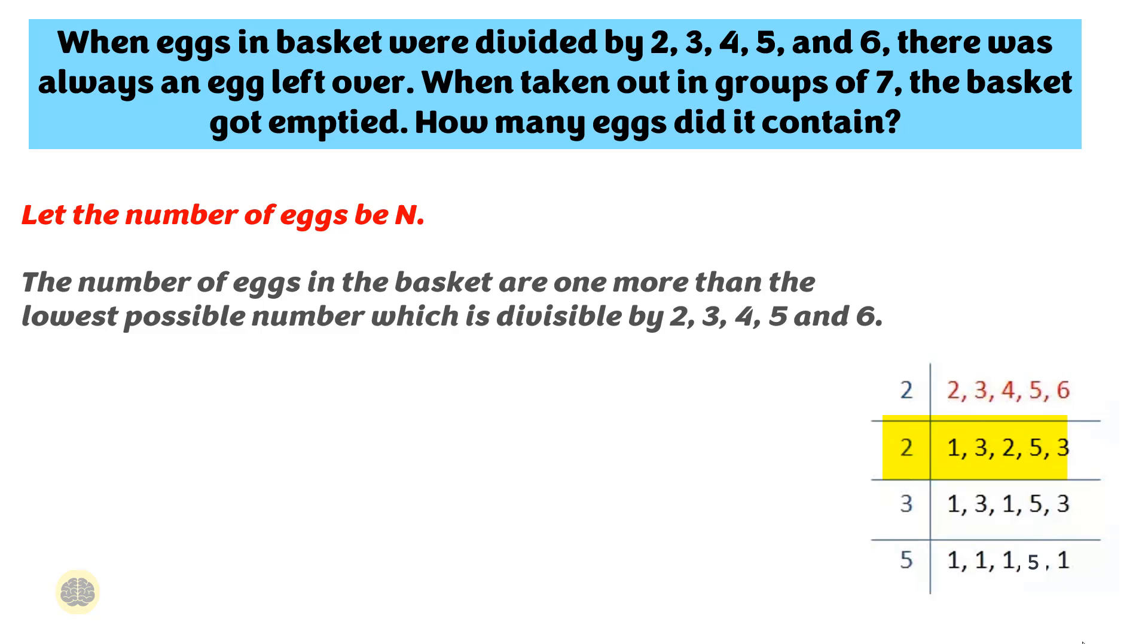In the second row again, 2 is the smallest prime number and it is a factor of 2. Write the prime number on the left of the numbers. In the third row, 3 is the smallest prime number and it is a factor of 3. In the fourth row, 5 is the smallest prime number and it is a factor of 5. As we can see now, only co-prime numbers are left in the last row.